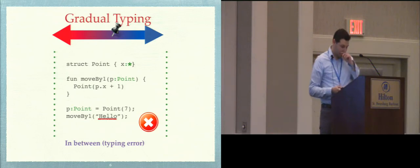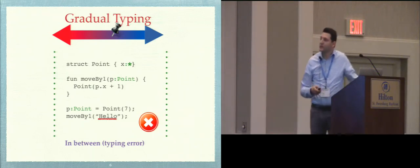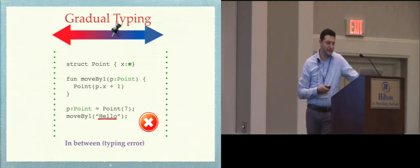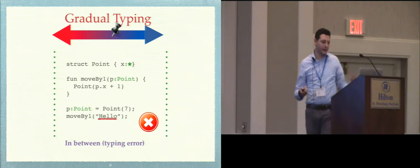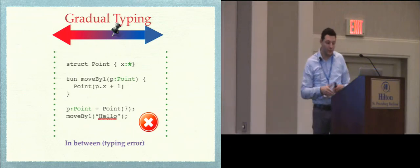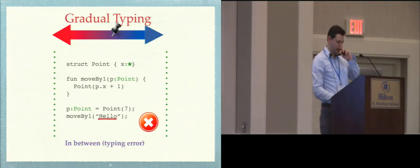Still, Gradual Typing rejects programs when we find a type error. For instance, if 'move by one' explicitly asks for a point and we pass a string, at compile time this program will be rejected.